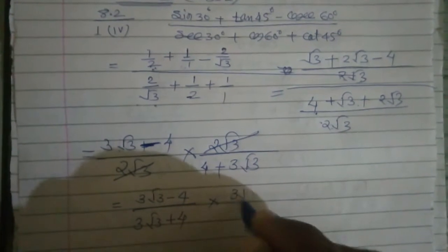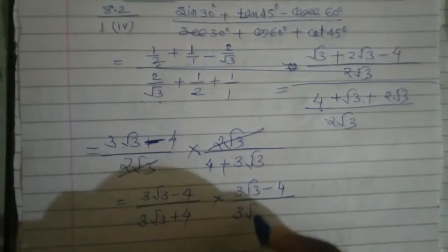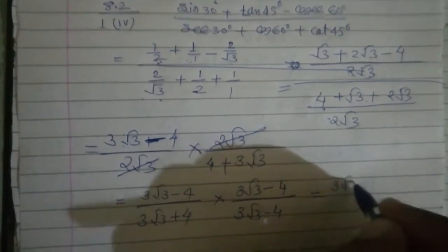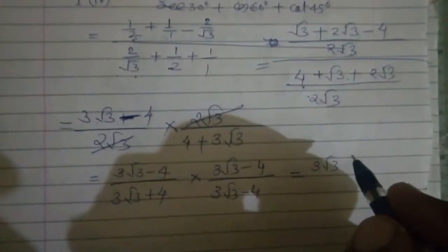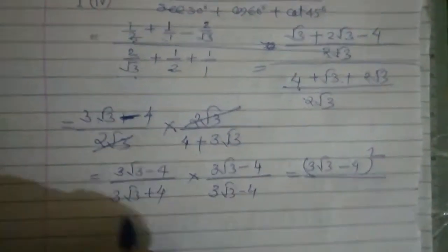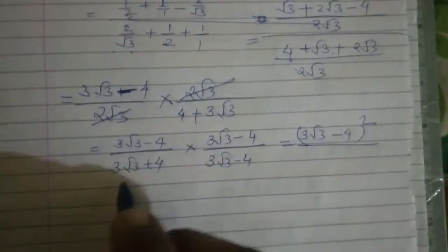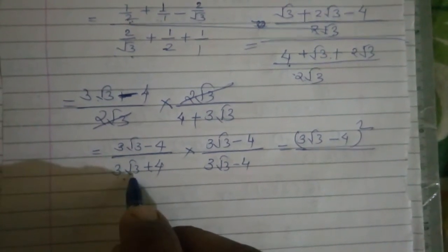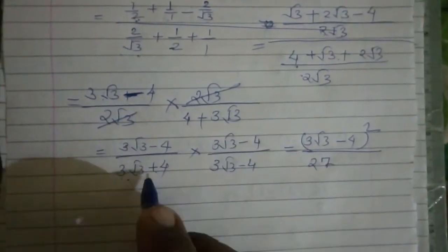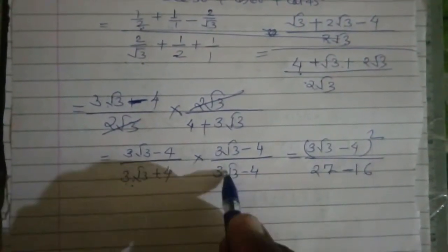इसको rationalize करें तो क्या होगा? 3 root 3 minus 4 और 3 root 3 minus 4 — तो यह double bar होगा। नीचे A plus B और A minus B — A square minus B square वाला है — A plus B into A minus B. 3 का square 9 और root 3 का square 3, तो 9 into 3 = 27. And minus 4 का square — 16. So 27 minus 16.